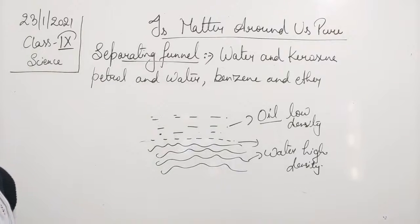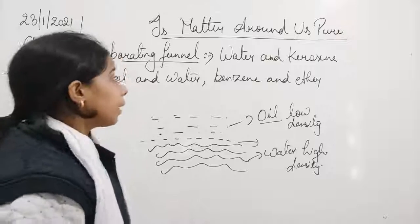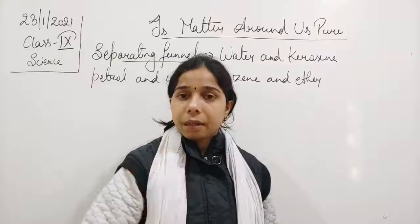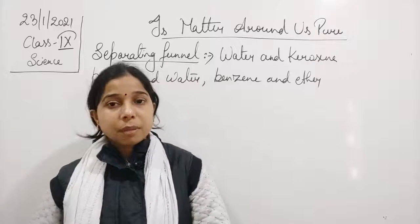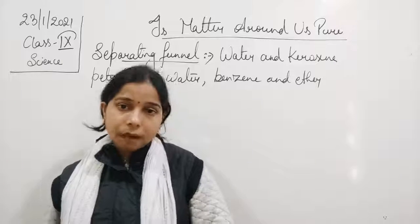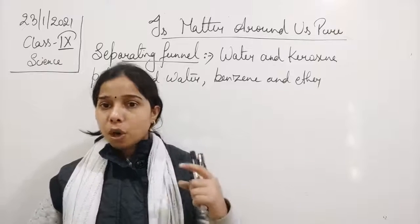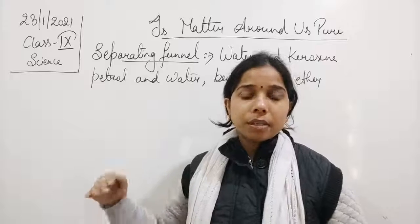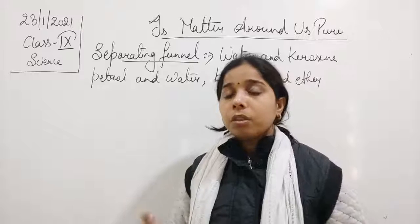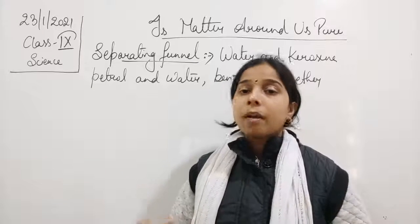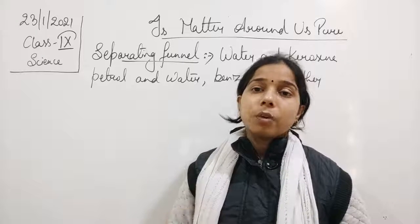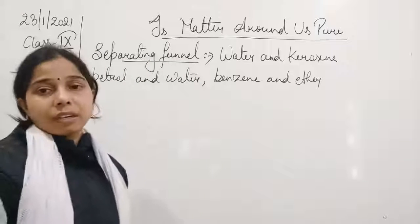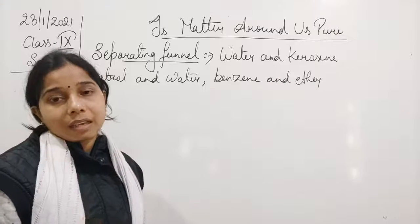When the two layers are clearly formed, we open the stopcock at the bottom of the separating funnel. Since water is at the lower end due to its higher density, we collect the water first in one beaker, and then collect the oil — the lighter liquid floating on top — in another beaker. This is how we separate two immiscible liquids using the separating funnel.